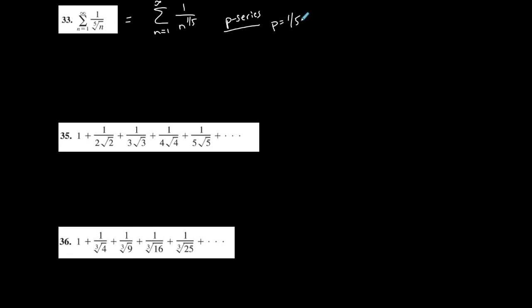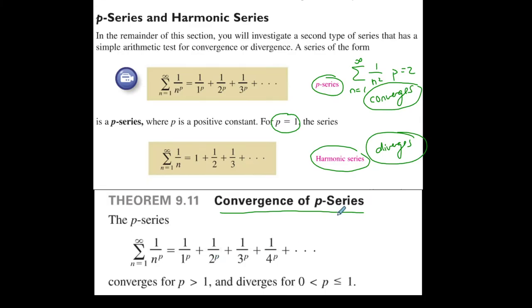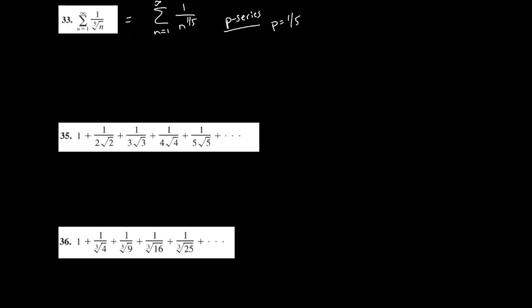Using the p-series test for convergence: if p is between 0 and 1, inclusive of 1, then it diverges. In this case p is equal to 1/5, and therefore this series diverges. I want to recognize the p-series, and then based on p, determine if it converges or diverges.